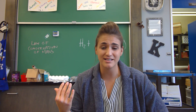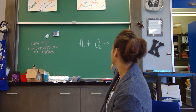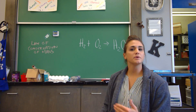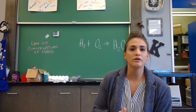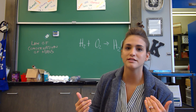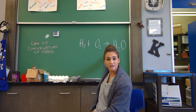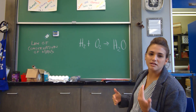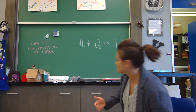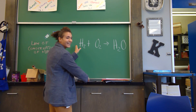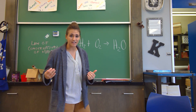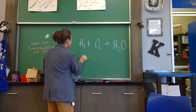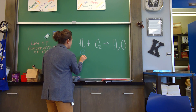So now what we need to do is balance this equation right here. I wrote this equation on the board — we're making water. We're taking a molecule of hydrogen plus a molecule of oxygen and we're yielding — this arrow means yield — we are yielding H2O, or water.